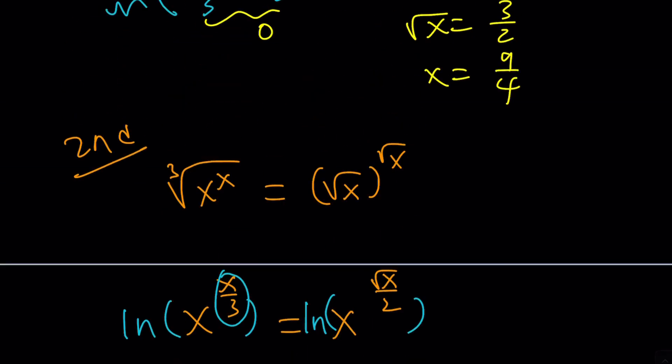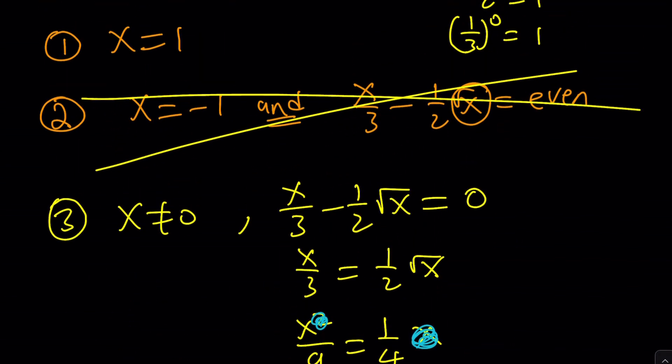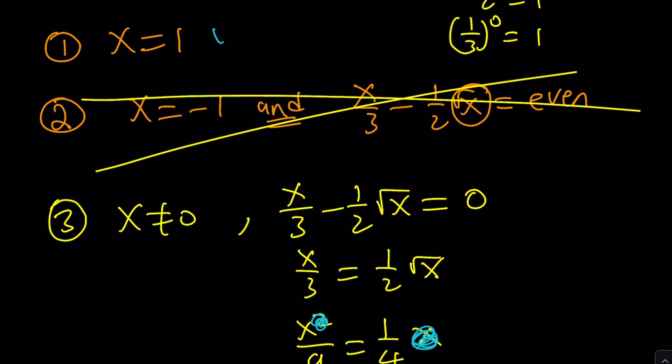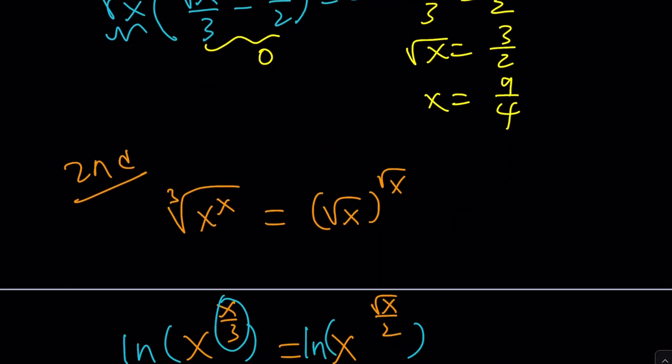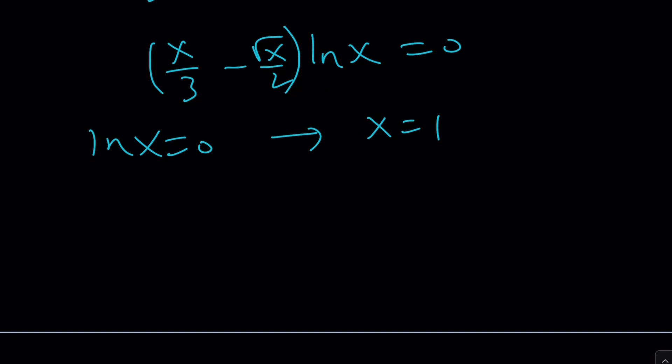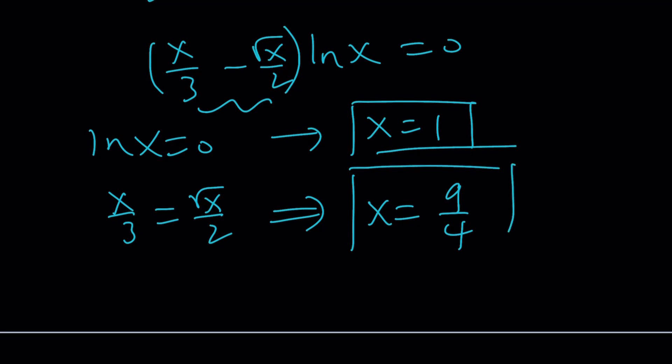ln x equals 0 implies x equals 1, and that's something that we got, didn't we? I think that was the first thing we got. Yes, x equals 1 is the first obvious solution. And the other solution is going to come from this equation right here. x over 3 equals root x over 2. As before, you're going to get x equals 9 fourths. As before. So there are two real solutions.